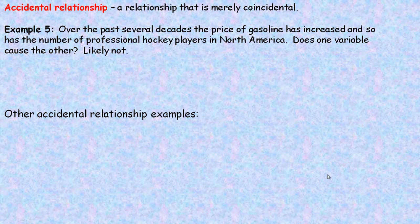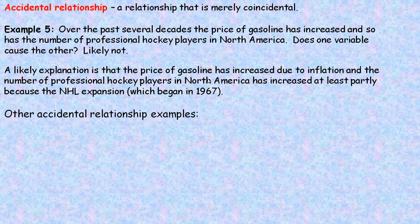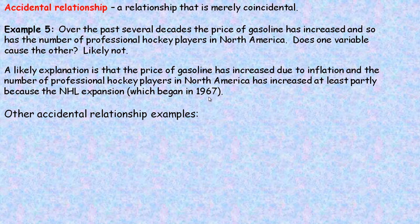Last but not least, accidental relationships — a relationship that is merely coincidental. For example, over the past several decades the price of gasoline has increased, and so has the number of professional hockey players in North America. Does one variable cause the other? Likely not. The price of gasoline has increased due to inflation, and the number of professional hockey players has increased at least partly due to NHL expansion, which began in 1967. So there is probably only an accidental relationship between the two variables.